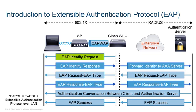An EAP identity request comes in from the wireless client as it attempts to attach to the AP and exchange information. An EAP identity response is sent back from the supplicant, and that is also forwarded for identity purposes to the AAA server — the authentication, authorization, and accounting server. Then the EAP request EAP type is sent back, and the supplicant responds, so both sides agree on the EAP type.